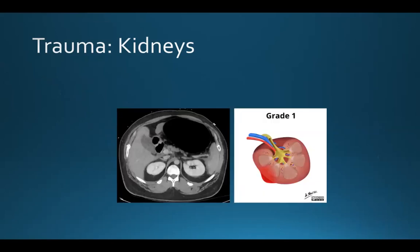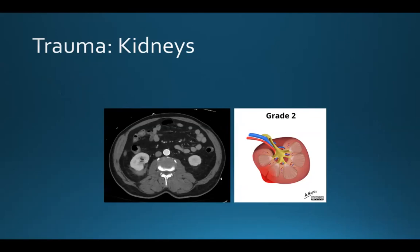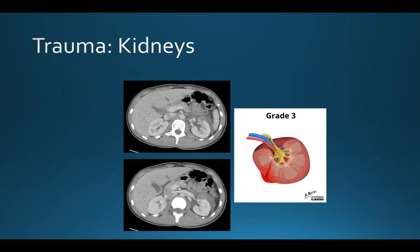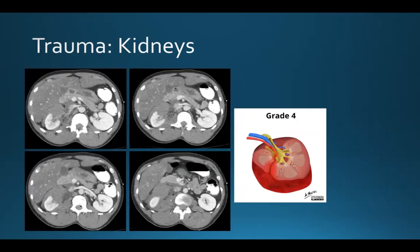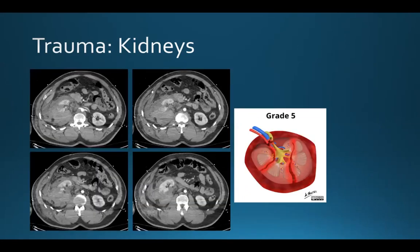Here are some examples of what the different grade injuries look like on CT. Here's a grade 1 injury, a grade 2 injury, a grade 3 injury involving the left kidney. These images are from a grade 4 injury involving the right kidney, and these images are from a shattered kidney, or grade 5 injury, of the right kidney.